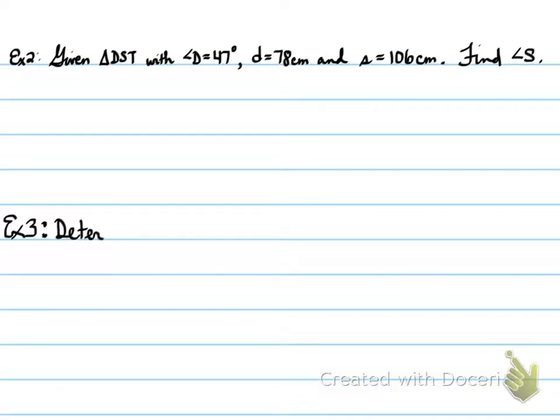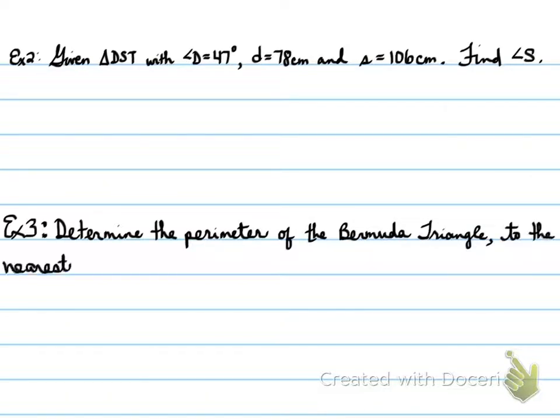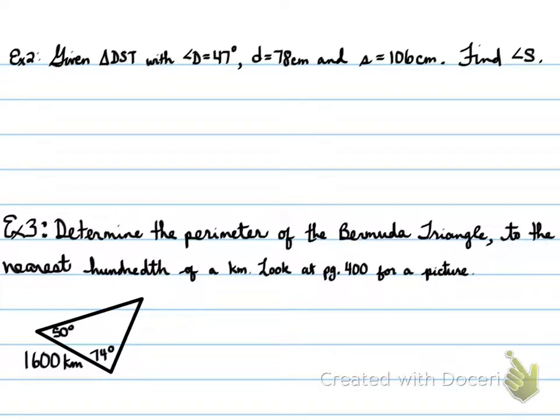Example number two. Solve for triangle DST with angle D equals 47, little d equals 78, and S equals 106 centimeters. Find angle S. Example three on this page involves a Bermuda triangle with a diagram given. In the first one there's no diagram, and the second one there is. We're going to find angle S. Let's draw the triangle out.